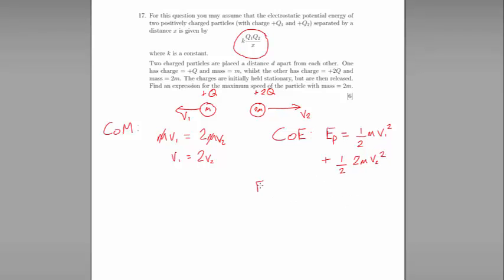Let's factorize that equation. E_P equals half M multiplied by V1 squared plus 2V2 squared.